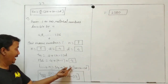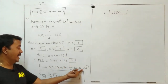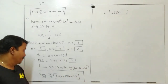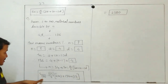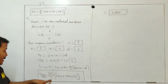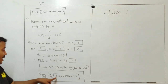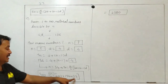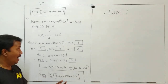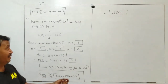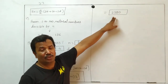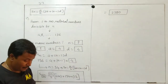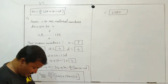Now Sn is equal to n upon two, into two a plus n minus one into d. Using this formula, S thirty four is equal to thirty four divided by two, into two into four plus thirty four minus one into four. After calculation we get the final answer is two thousand three hundred and eighty.